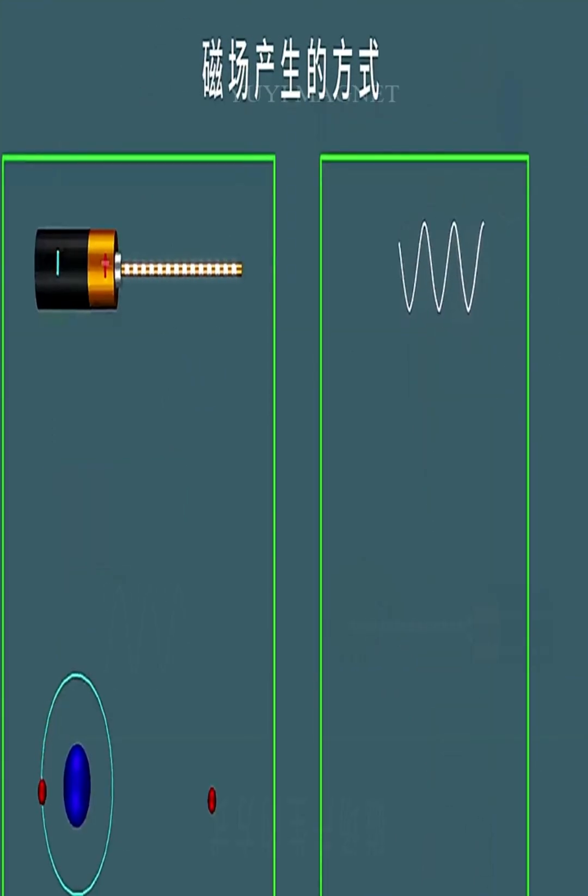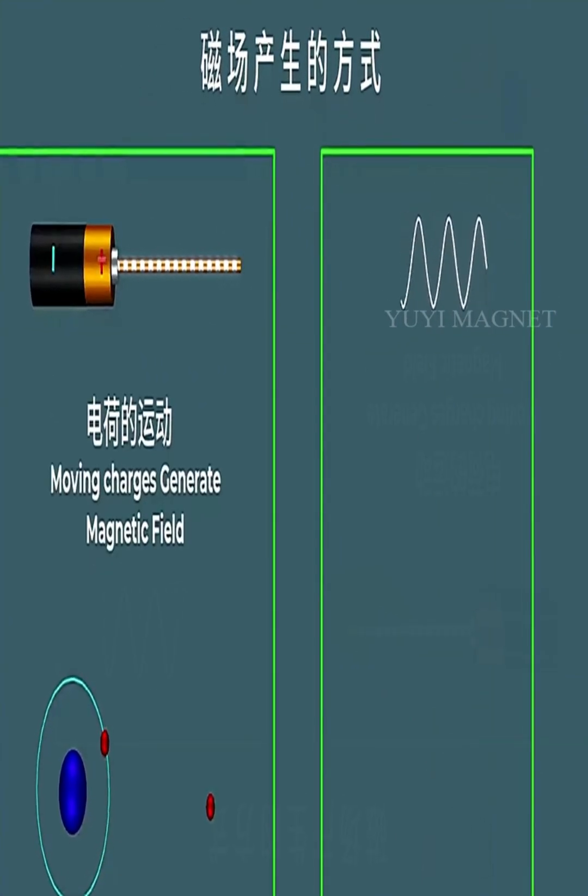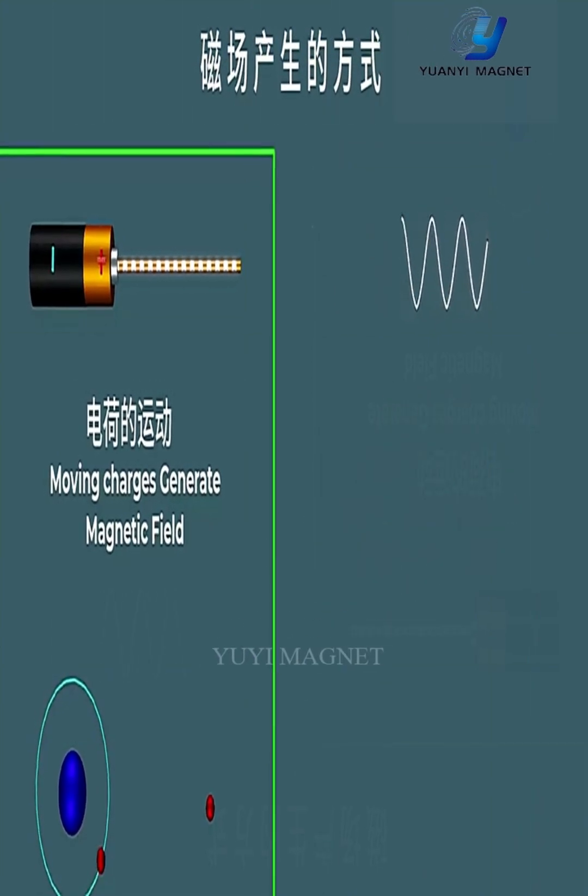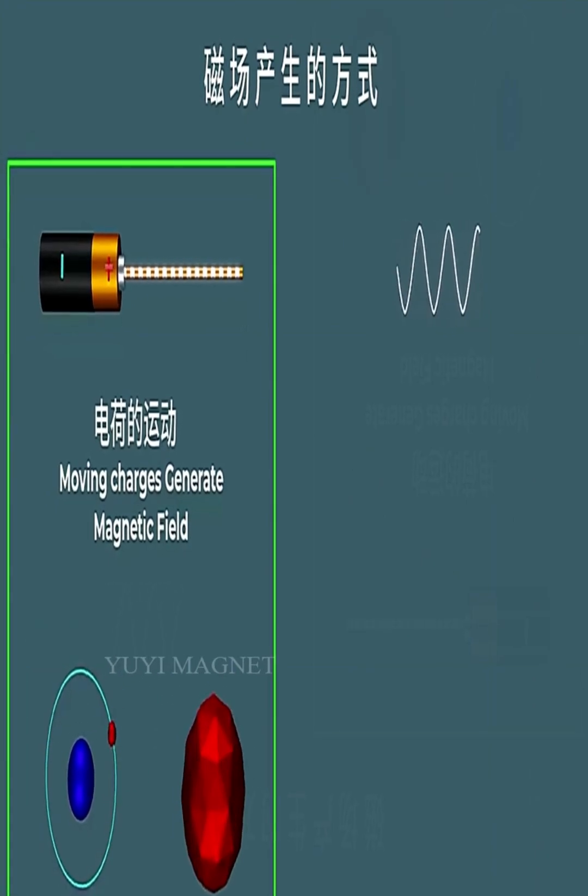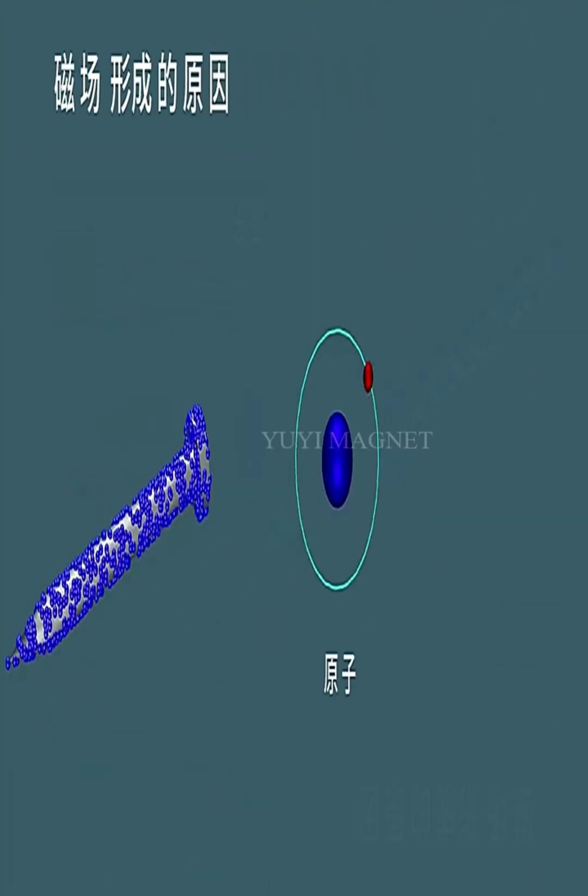Magnets mainly come in two types: permanent magnets and electromagnets. Permanent magnets maintain their magnetic properties and naturally preserve their magnetism.